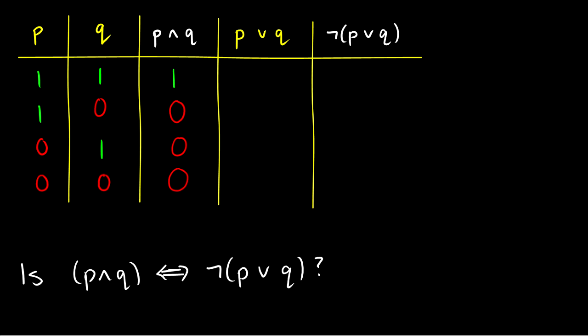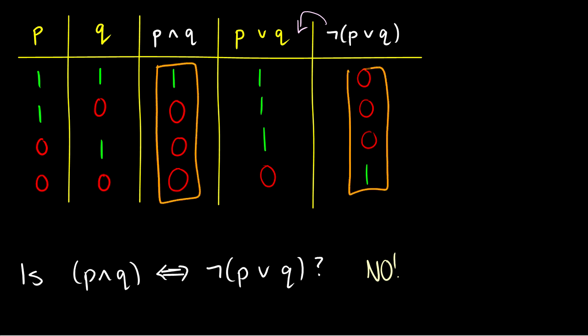P∨Q is true when at least one of P or Q is true. So it's going to be true in the first three rows because P is true in the first two rows and Q is true in the third row, but false in the fourth row because P and Q are both false. Now ¬(P∨Q) — we just take the negation of the previous column. So 1, 1, 1, 0 becomes 0, 0, 0, 1. So are P∧Q and ¬(P∨Q) logically equivalent? The answer is no, because their truth conditions are not identical. Therefore, these are not logically equivalent.